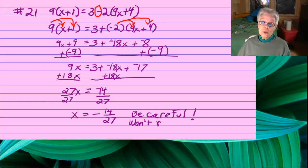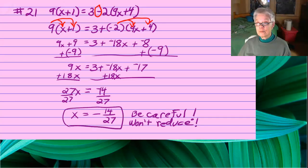So x is going to equal negative 14 over 27.